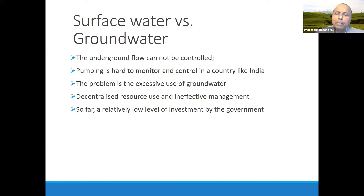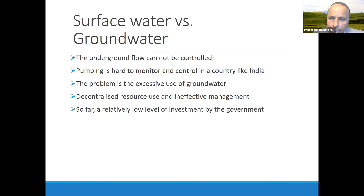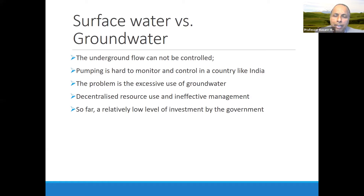Surface water is visible — we can see it and build dams — so there has been more emphasis and more investment by governments on surface water. Groundwater has been invisible. The flow of groundwater can't be controlled; it has its own natural flow. Groundwater pumping is hard to monitor and control in a country like India with millions of bore wells and dug wells. The problem with groundwater is its excessive use — we are using more water than what is recharged. It's a decentralized resource, not limited to one particular area, and investment has been lower compared to surface water.